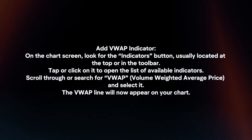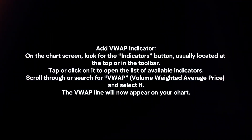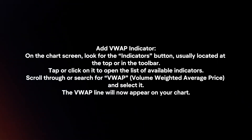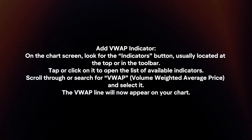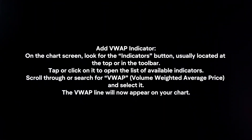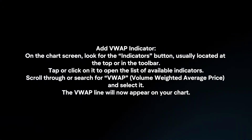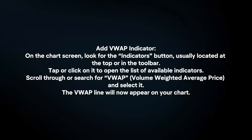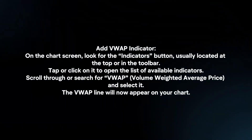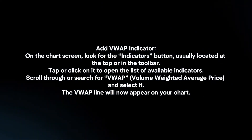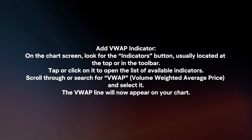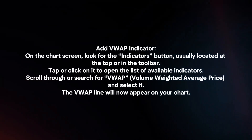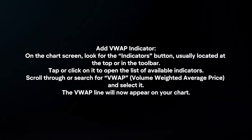Add the VWAP indicator. On the chart screen, look for the indicators button, usually located at the top or in the toolbar. Tap or click on it to open the list of available indicators. Scroll through or search for VWAP and select it. The VWAP line will now appear on your chart.